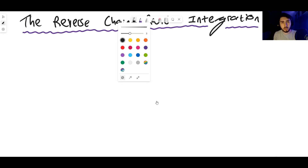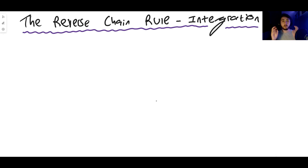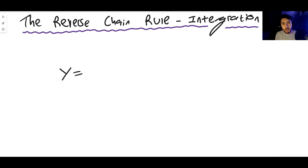So what actually is the reverse chain rule? Unlike the chain rule, there's no kind of formula that you need to apply. It's more about remembering what happens when you differentiate a composite function. For example, let's say we have a function y equals 1 plus x squared to the power of 5.